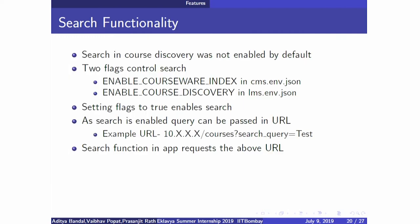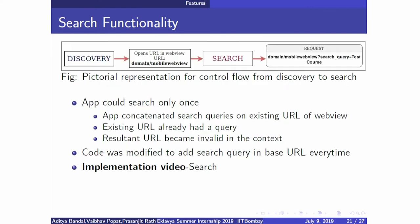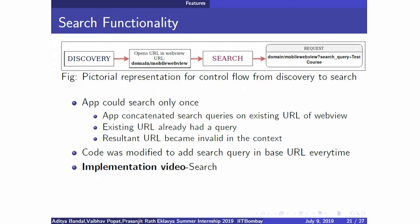Coming to search functionality: when there are many courses, enabling this feature becomes very necessary. It can be done easily by setting two flags — enable_courseware_index and enable_course_discovery — in cms.env.json and lms.env.json. The problem we faced was that the search function worked correctly on first search, but the next time, the code was taking the complete existing URL (including the previous search query) as the base URL. What we needed was only domain/mobile-webview as the base URL, so this fix was added in the code.